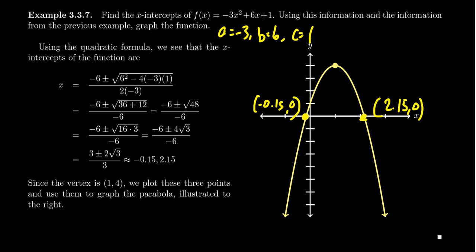Then if we could find the vertex, we could graph this thing pretty well, as you can see on the screen. The vertex, remember, we just find that to be h is negative b over 2a. Which in this situation, we get negative 6 over negative 6, which is equal to 1.